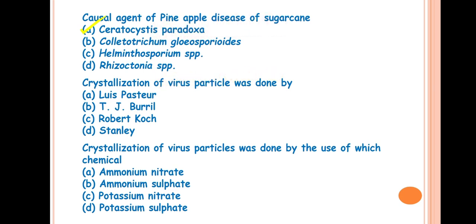The next question is crystallization of virus particle was done by? The answer is D, Stanley. Wendell Meredith Stanley. In 1935, he first time crystallized the virus particle that is the tobacco mosaic virus. Second virus which is crystallized is the poliomyelitis virus, that was crystallized in 1955. So the first one is the tobacco mosaic virus that is crystallized by Stanley in 1935. For this work also he got the Nobel Prize in 1946 in chemistry.